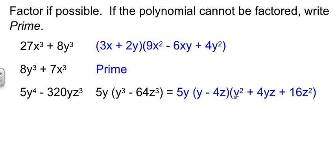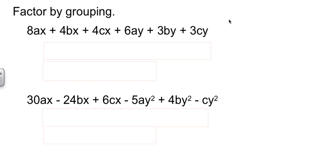The 5y hangs out in front. Nothing changed with that. y is what's cubed in first minus 4z. Now, square the first part, so square the y. Change the sign. y times 4z is 4yz. And then plus, if we square 4z, we get 16z². So sometimes you have to look out for that common factor, which leads us to our next kind of problem. They're going to ask us to do some factoring by grouping.